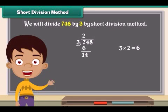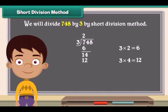Then divide 3 into 14. 3 fours are 12. 14 minus 12 is 2. Write 4 above and write 2 in front of 8 to make it 28.